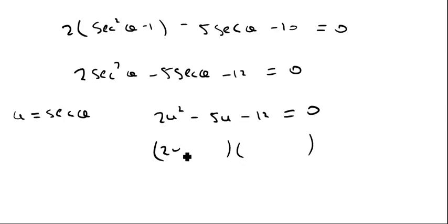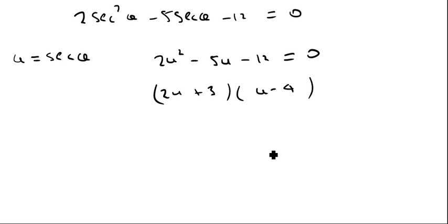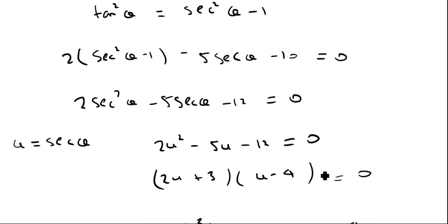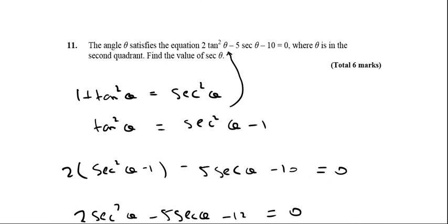So if I factorize that, I will get 2u plus 3 and u minus 4. Therefore, this is going to give me u equals minus 3 over 2, or u is equal to 4. And remember, u is sec θ, so that's just going to give me sec θ equals minus 3/2 or 4.